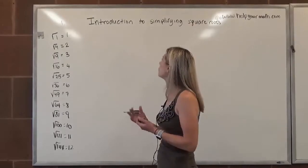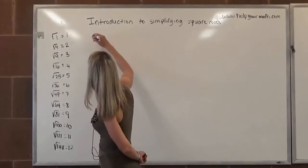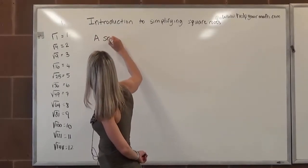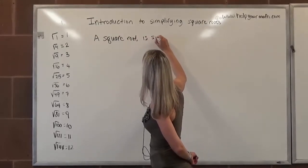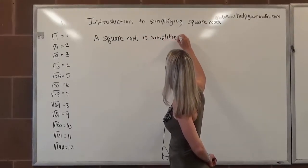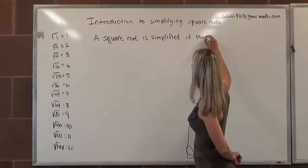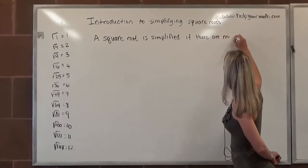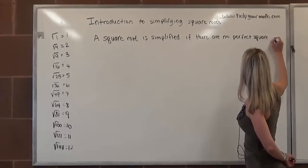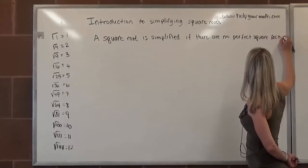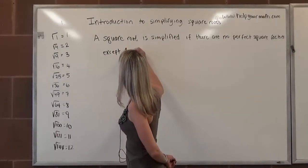The next thing we might need to do is define what does it mean to simplify a square root. So we say that a square root is simplified if there are no perfect square factors except for one under the radical.